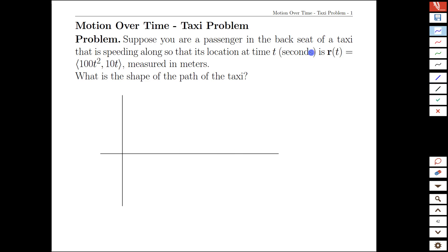Imagine we're in a taxi looking down from above, so this is a top view looking down on a map, x and y, and what we have is our position defined by x is 100t squared and y is 10t.